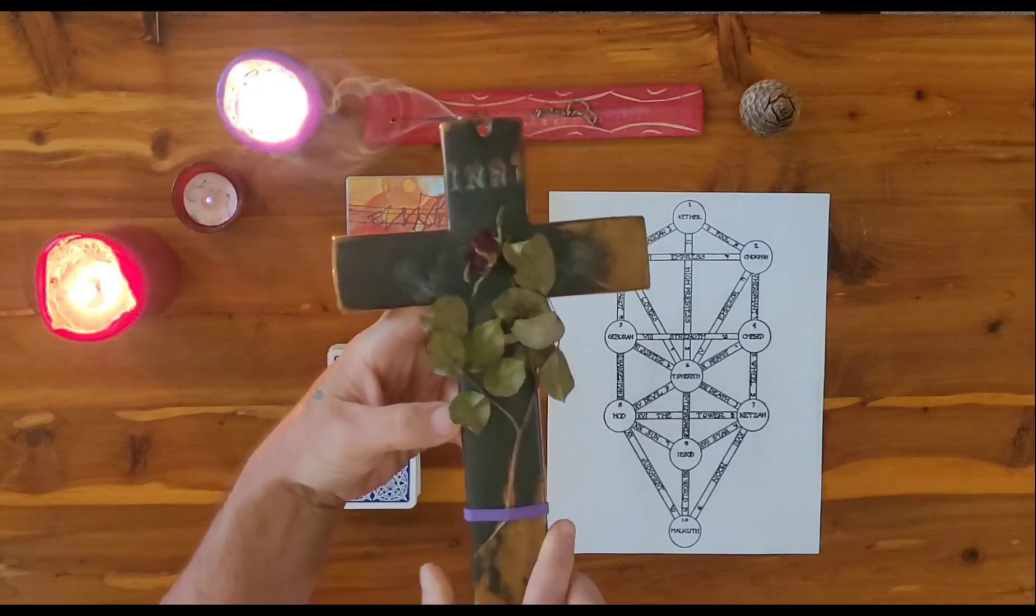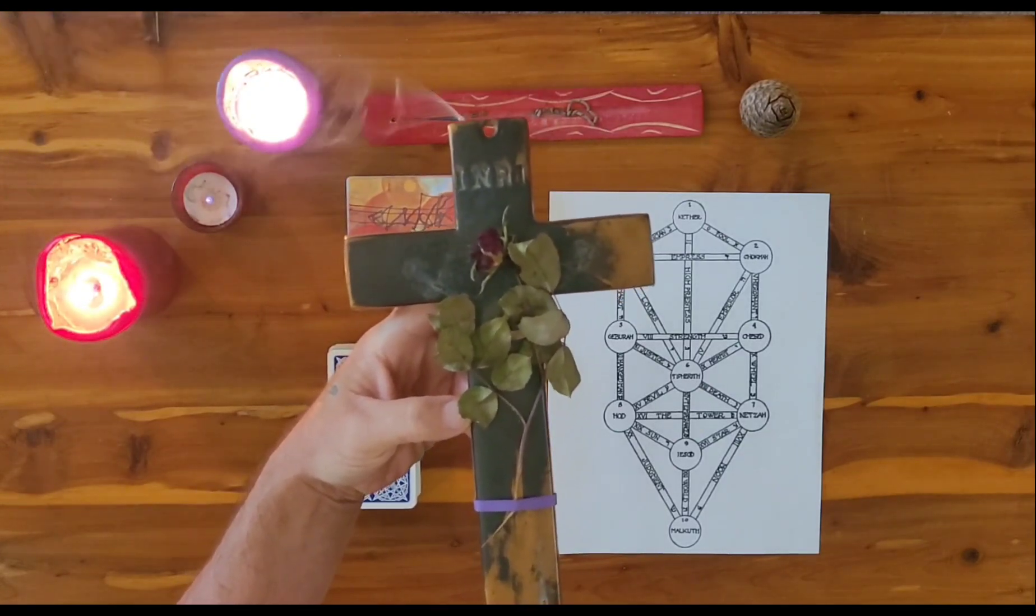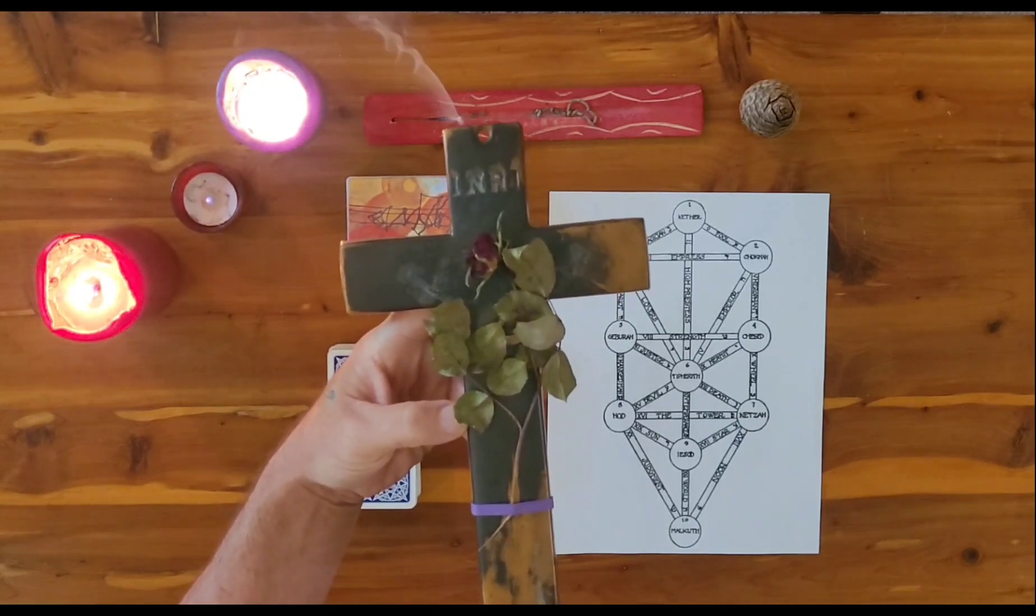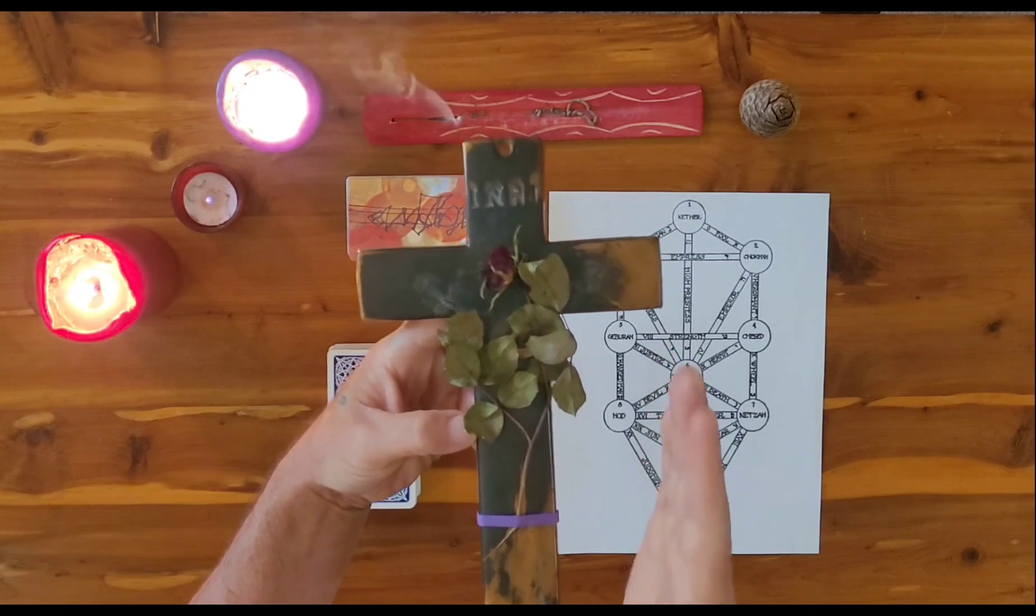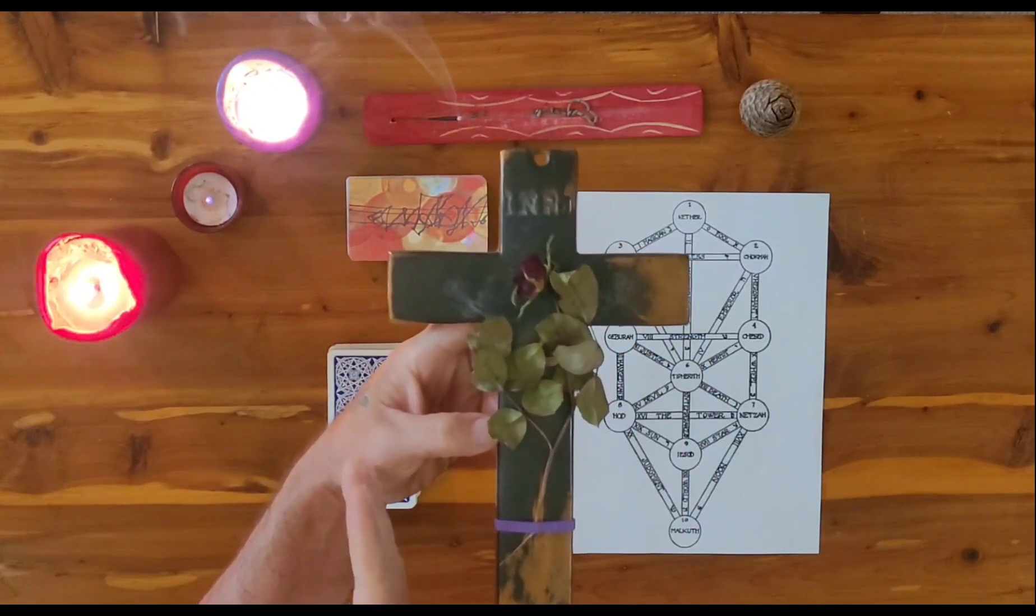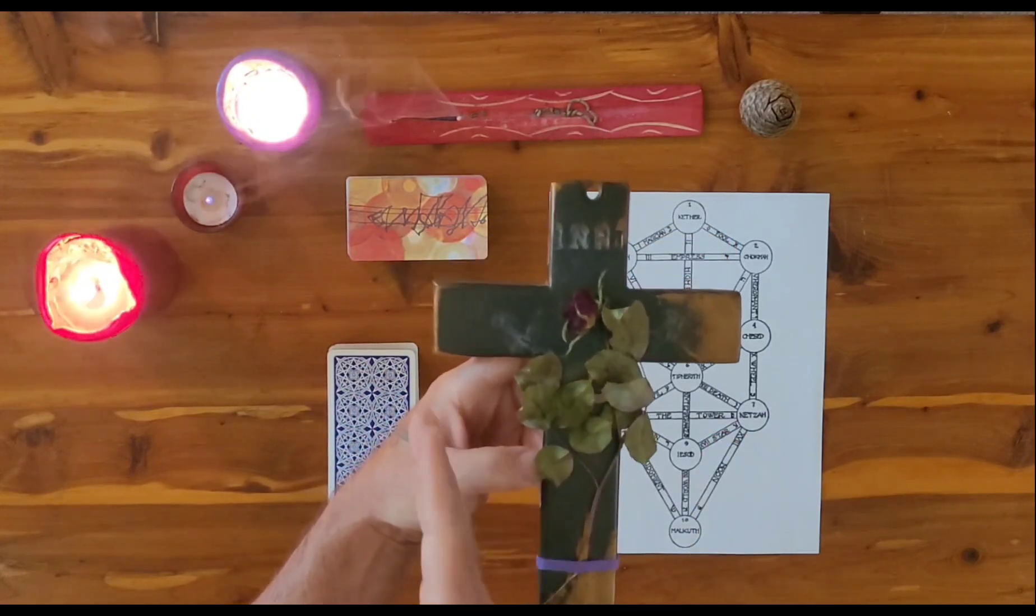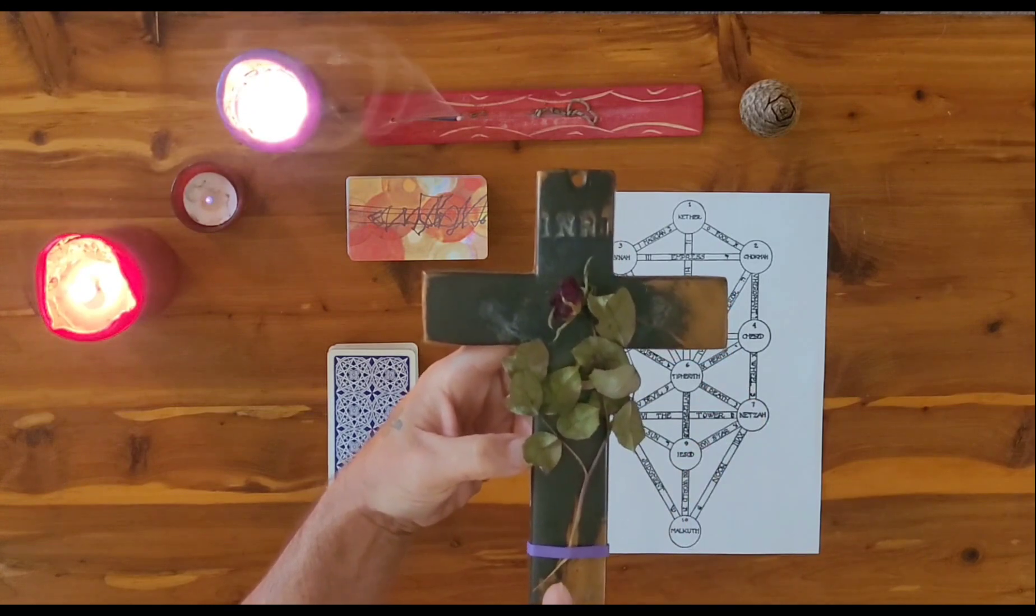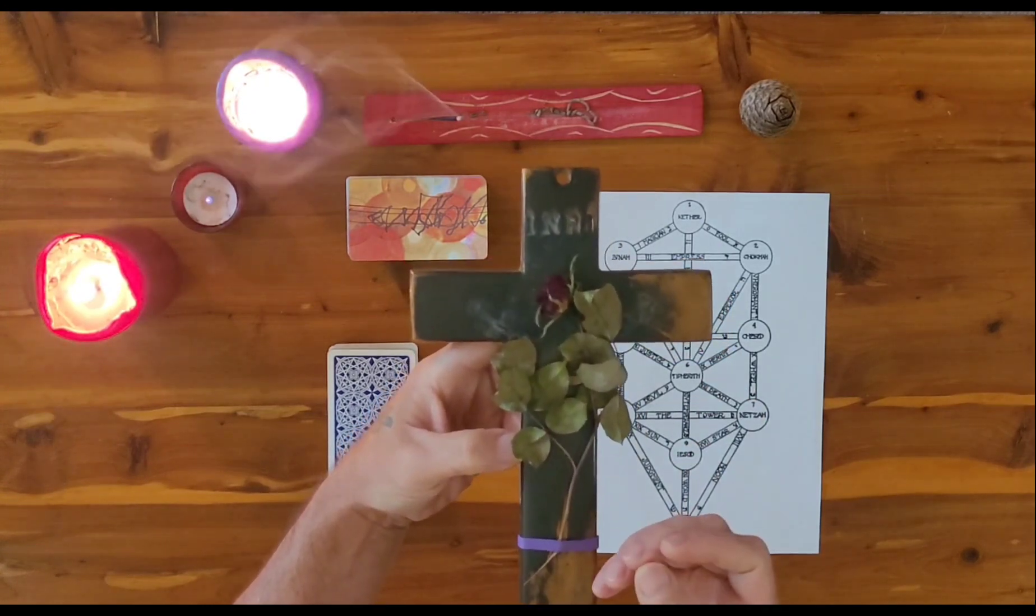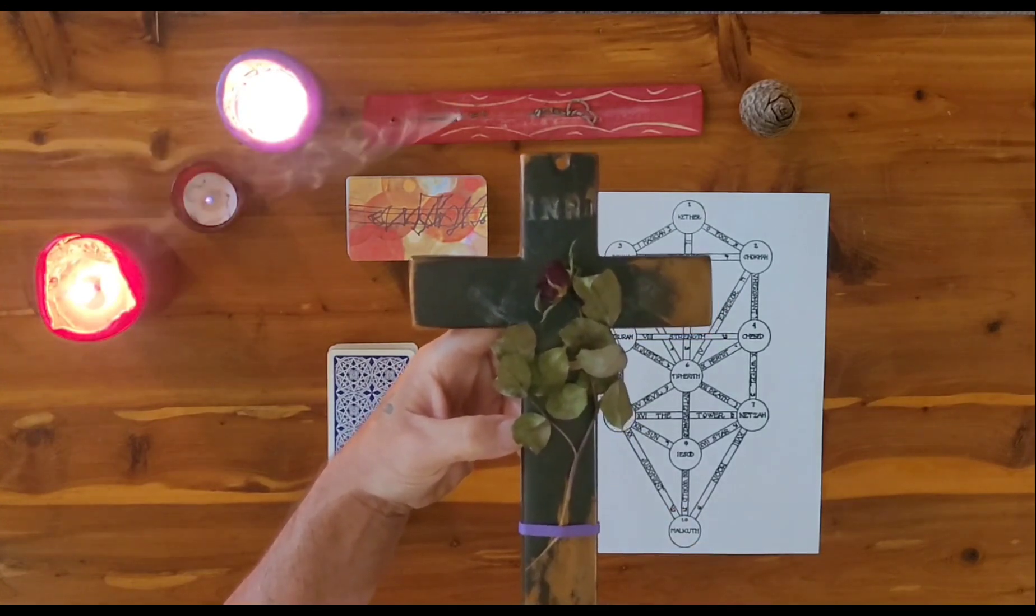Here in the Rose Cross it's almost like we have the representation of the Tree of Life like the three pillars. So one here, one up the center, and one to the left. Now this would be mercy, severity, and then the middle pillar. And the middle pillar path is where the Rose represents the blossoming of your divine consciousness.